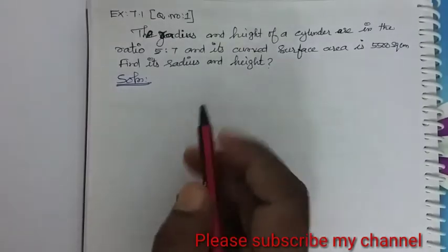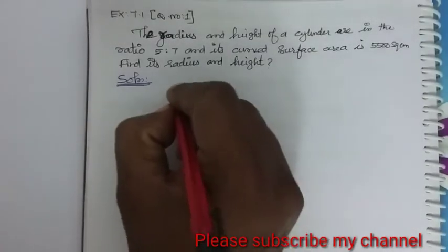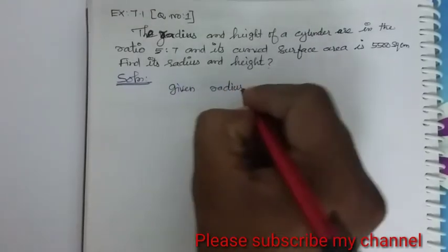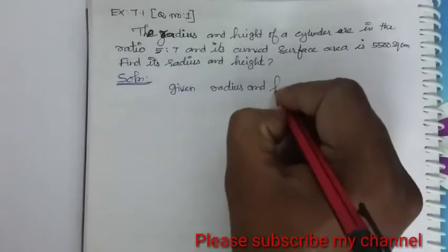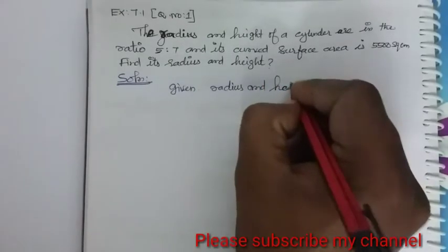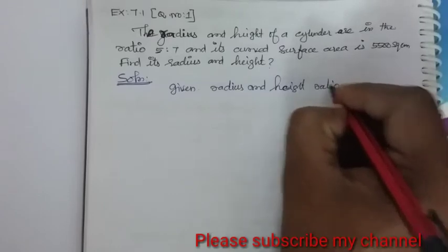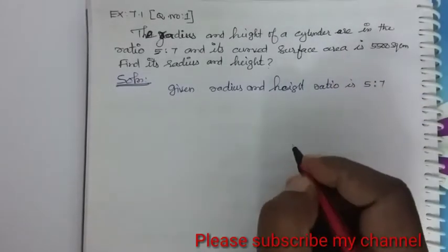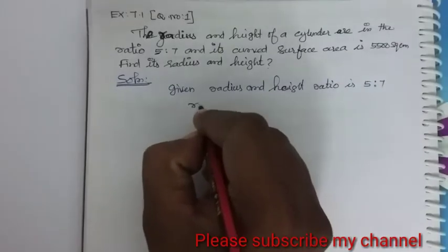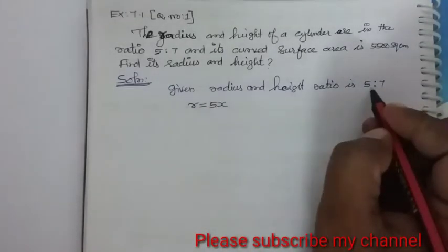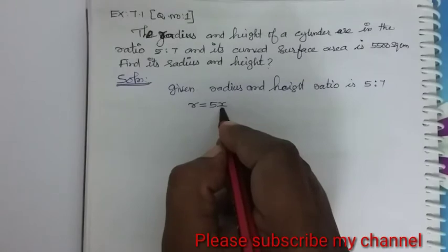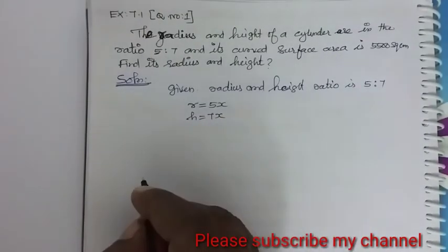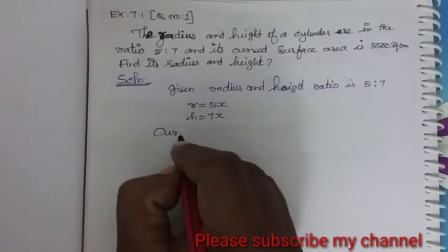So in the question, the radius and height of the cylinder are in the ratio 5 is to 7, and curved surface area is given by 5,500. We need to find its radius and height. Given that the radius and height ratio is 5 is to 7, so we have to take radius r equal to 5x.